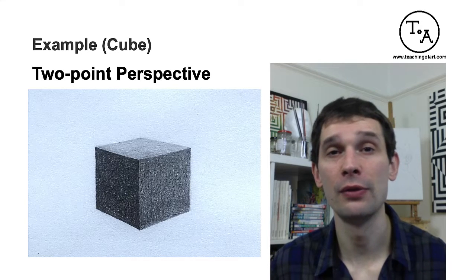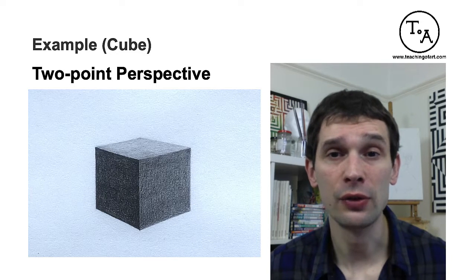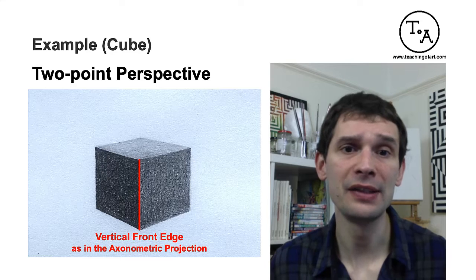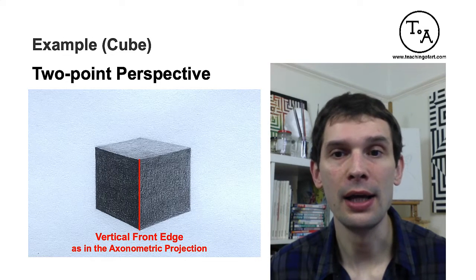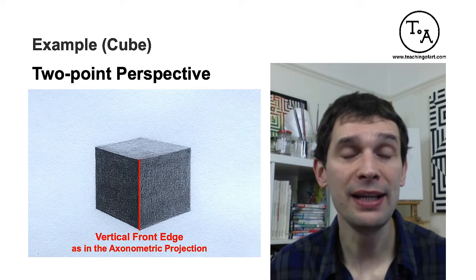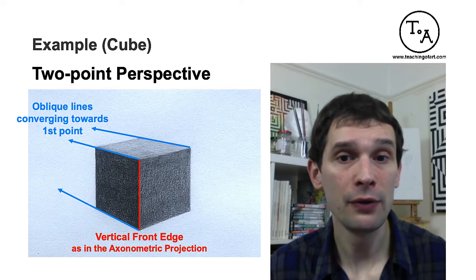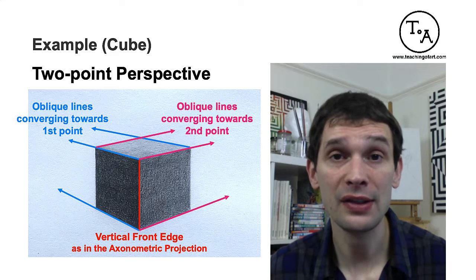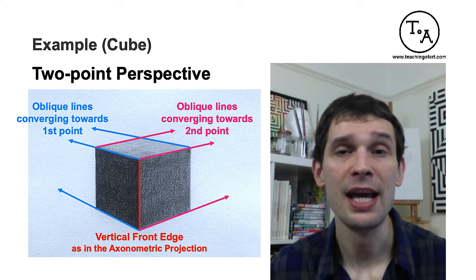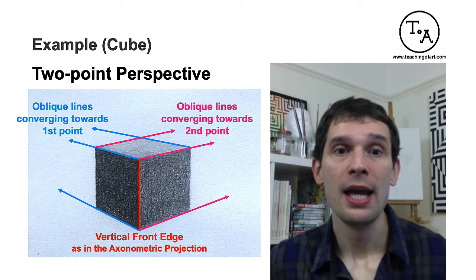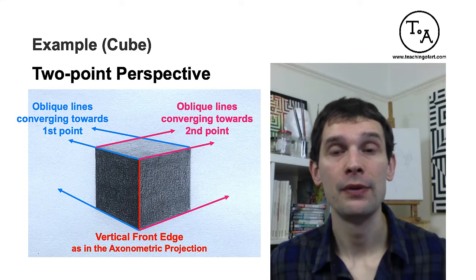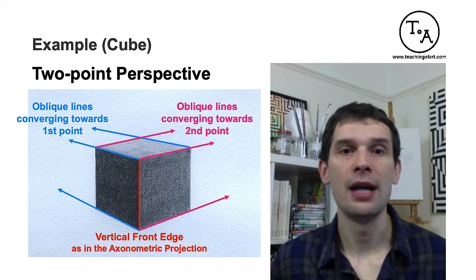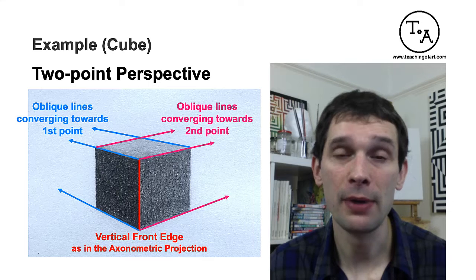In two-point perspective, this is very similar to axonometric projection because the viewer faces the edge — in other words, the edge is closest to you. The difference between the two is in the lines that create the depth: the oblique lines are no longer parallel. This time, the left oblique lines go to the first vanishing point, and all of the right oblique lines go to the second vanishing point on the horizon. We have two vanishing points on the horizon — that's why it's called two-point perspective. In all of these examples, the vertical lines of the object are 100% vertical, meaning they are parallel to the edge of your paper.